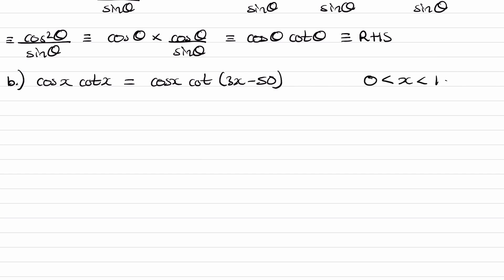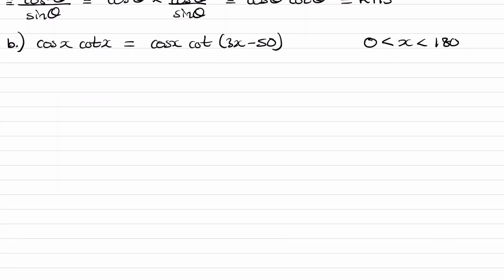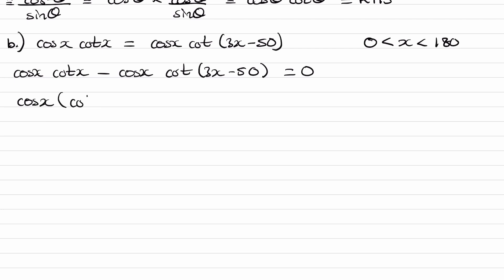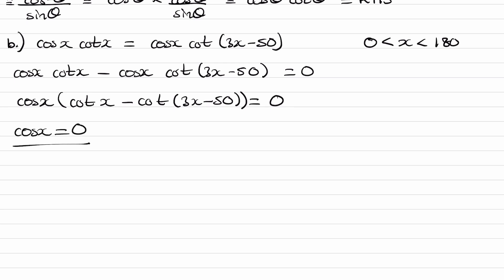I'll just write down that we're solving between 0 and 180. So bring everything to the left-hand side: cos x cot x minus cos x cot(3x minus 50) is equal to 0. And now we can factorise out cos x. So we end up with this. Notice how we wouldn't have got this if we had cancelled out cos x from both sides — that's why you don't want to cancel them out. You'll lose solutions.